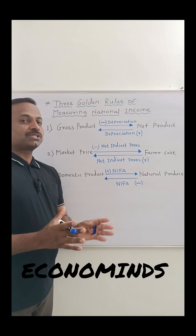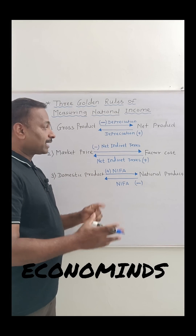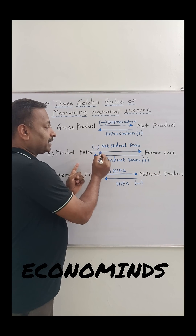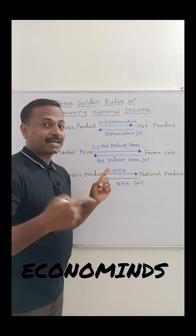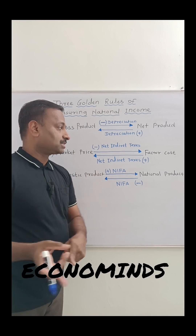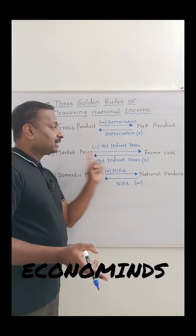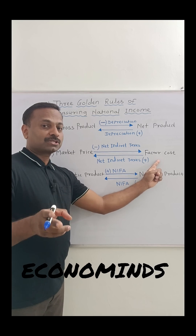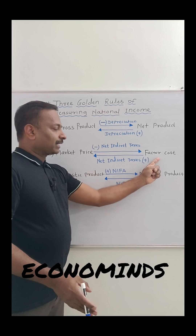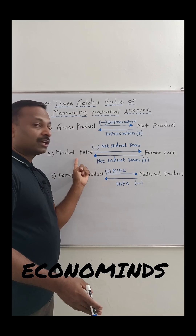The second adjustment is market price and factor cost. When domestic income or national income is given at market price and we have to calculate factor cost, we subtract net indirect taxes — that is, indirect taxes minus subsidies — from the market price. The result is domestic income or national income at factor cost.